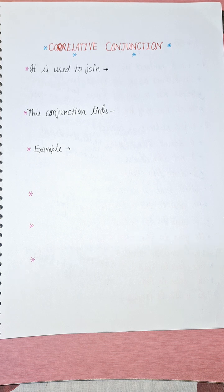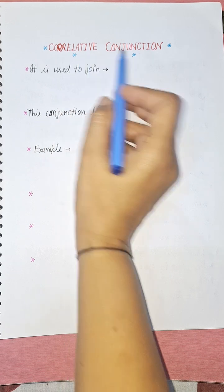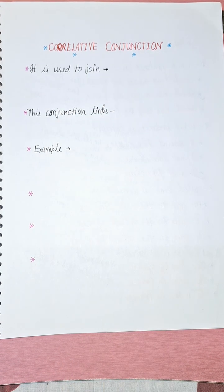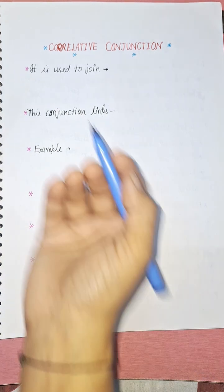So let's start correlative conjunctions. This is the third type of conjunction. We have three types: first is coordinating conjunctions, second is subordinating conjunctions, and the third is correlative conjunctions. A correlative conjunction is one which is used to join two sentences that are of equal status or equal importance.